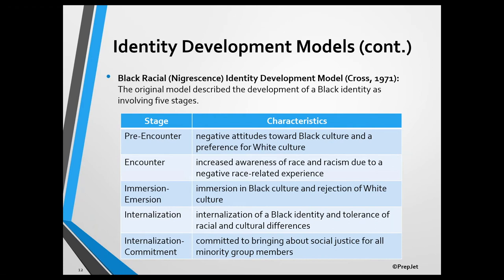Cross subsequently reduced the number of stages to four by combining the internalization and internalization-commitment stages. Then Cross and Vandiver changed its name to the Black Racial Identity Development Model and reduced it to three stages, each including multiple identity subtypes. The first stage is the pre-encounter stage, which includes assimilation, miseducation, and self-hatred subtypes. The second stage is the immersion-emersion stage, consisting of intense black involvement and anti-white subtypes. The third stage is the internalization stage, which consists of black nationalist, biculturist, and multiculturalist subtypes. For the exam, you want to be familiar with all three versions of the model.